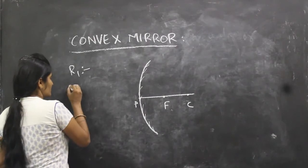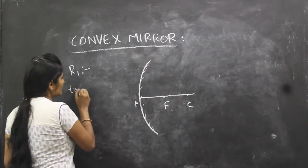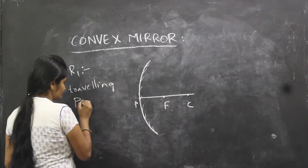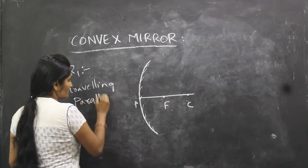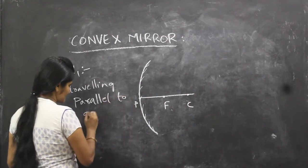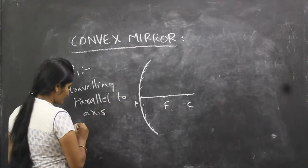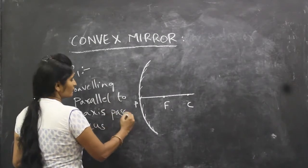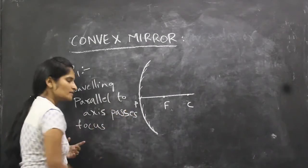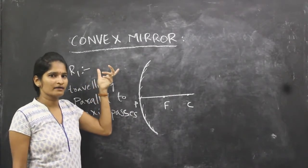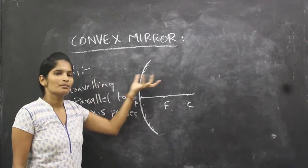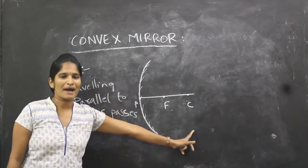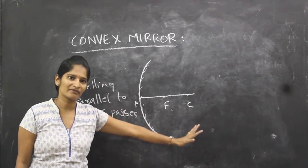The first ray is R1. What is the R1 ray? It is the ray travelling parallel to the principal axis. After reflection, it passes through the focus. So R1: ray travels parallel to the principal axis, and after reflection it passes through focus.